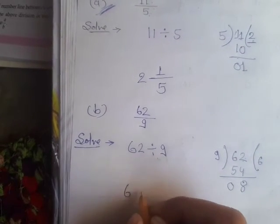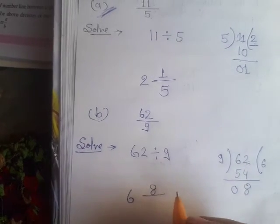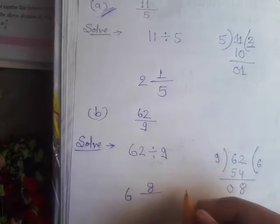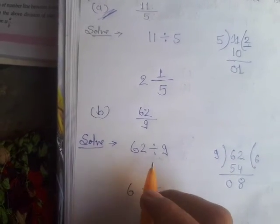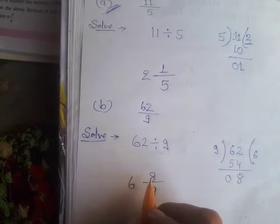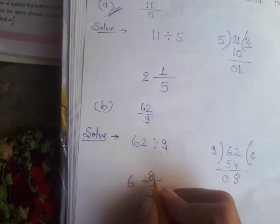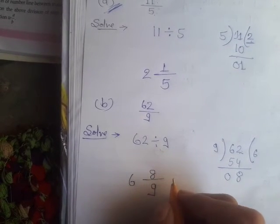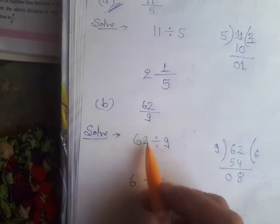Whole number is 6, remainder is 8 as numerator, and divisor is 9 as denominator. So 62 by 9 as a mixed fraction is 6 whole 8 by 9. Verification: 9 sixes are 54 plus 8 equals 62 by 9.